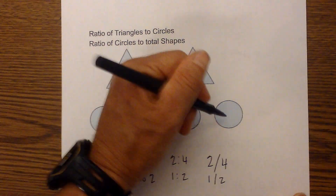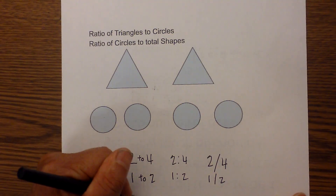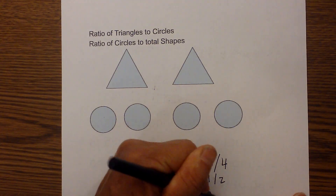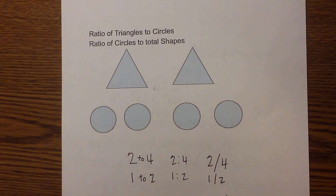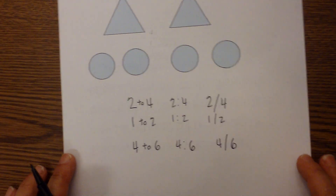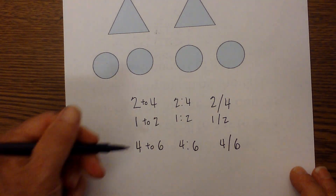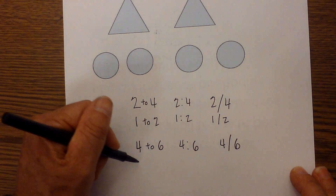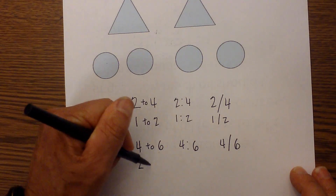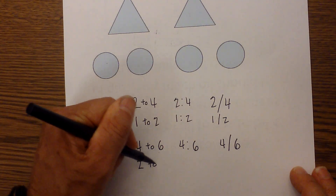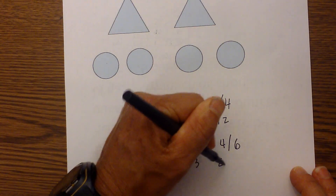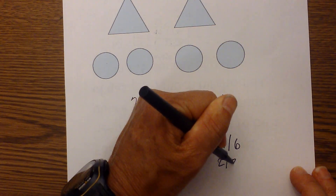We have six total shapes, giving us four to six. Again, you don't have to write it in all forms each time. Now let's reduce: two goes into both four and six, giving us two to three.